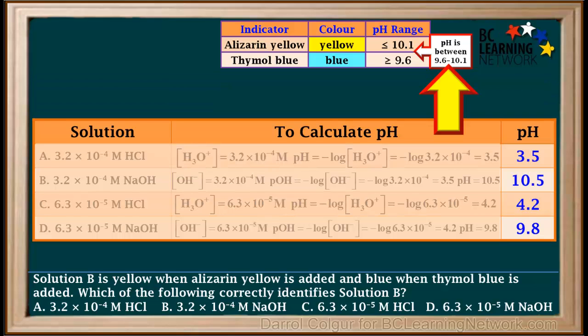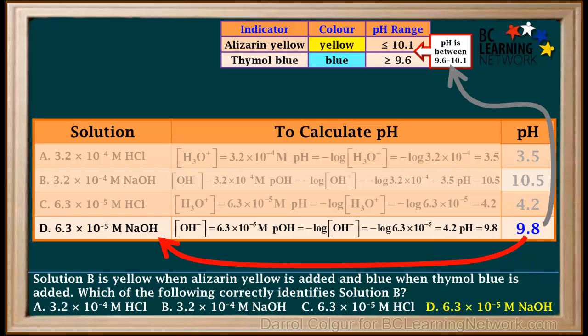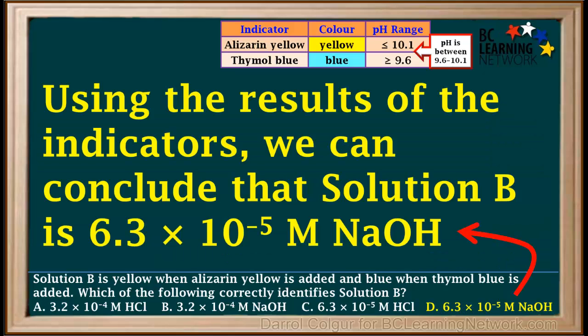Remember, the tests with the indicators told us that the pH of solution B is somewhere between 9.6 and 10.1. We see that the only pH which fits inside this range is 9.8, and the solution with a pH of 9.8 is choice D, 6.3 times 10 to the negative fifth molar NaOH. So to summarize, using the results of the indicators, we can conclude that solution B is 6.3 times 10 to the negative fifth molar NaOH.